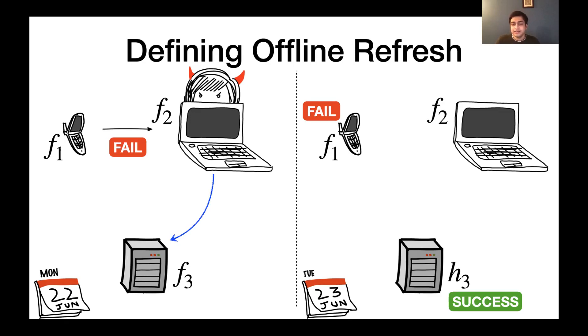So notice that this doesn't really harm unforgeability. That is, the secret that's encoded in f and h stay hidden. So the signature scheme that's built on top of this would still be unforgeable. But this creates another problem. That is, the same device could still be compromised on Tuesday, which means that f_2 is basically inaccessible. And f_1 and h_3, when combined, don't really make sense. So this means that the secret key is lost forever.